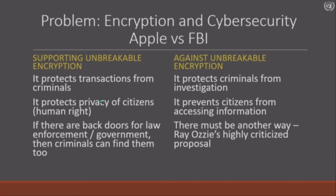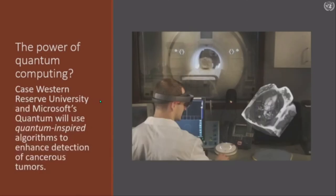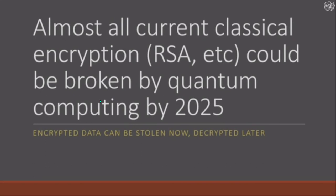So that brings us to: what does this have to do with quantum? Well, the power of quantum computing means you can use algorithms to enhance detection of cancerous tumors. And also, allegedly, almost all current encryption — if you're using the RSA type — could be broken by quantum computing by 2025, or maybe 2035, 2045, or 2055 — someday. Or it could be stolen now and decrypted later.